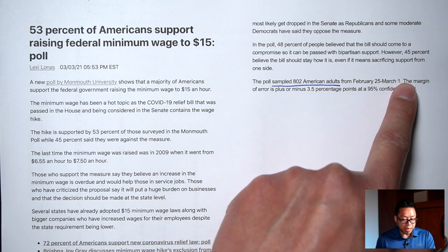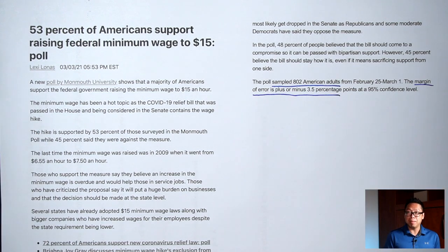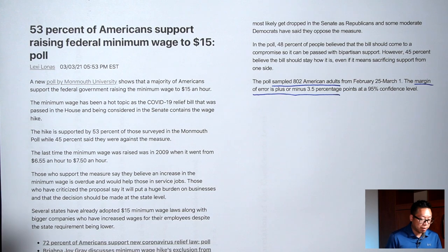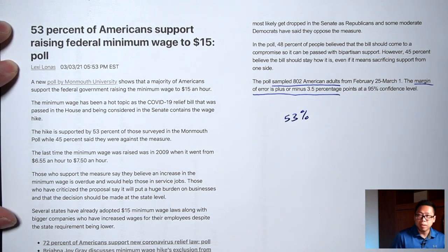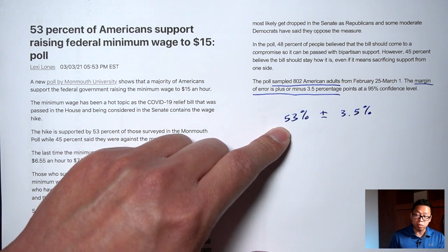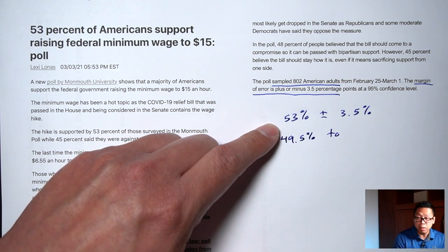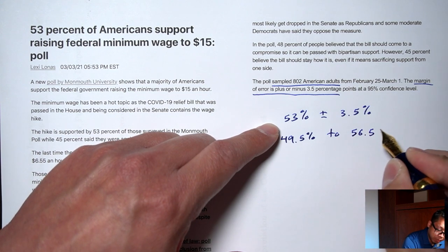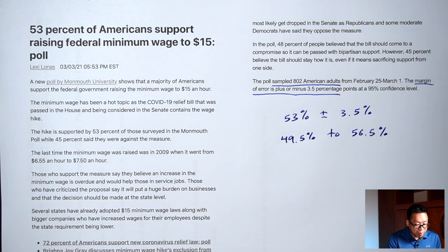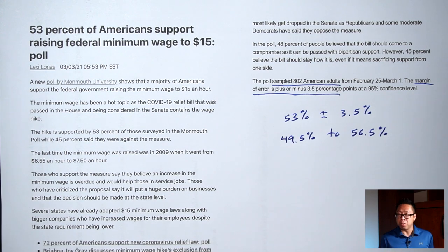Another question we're going to answer: in this next sentence, it says the margin of error is plus or minus 3.5 percentage points. What does that mean? The researchers are admitting that because they didn't ask all Americans and only asked 802 people, they could be off by plus or minus 3.5%. So it may not be exactly 53% — it could be as low as 49.5% or as high as 56.5%. But still, how did they get this 3.5%? Did they just make that up?